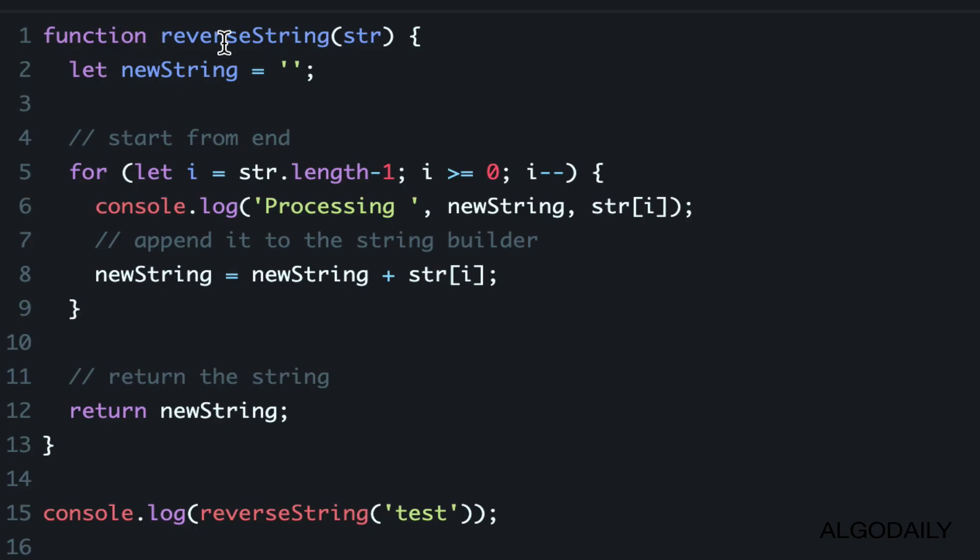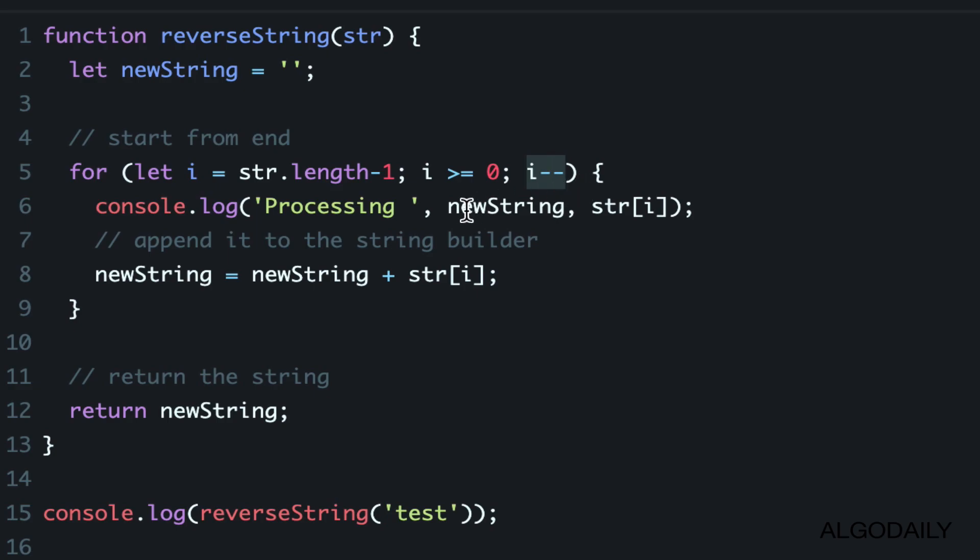You can see an example of that here, where we have a reverse string method that starts from the very end of the character array or string. Our termination condition is the beginning, and at each iteration we move the pointer down and decrement it. But of course, this wouldn't really be a fun algorithms challenge if we simply had to iterate from the back to the front.